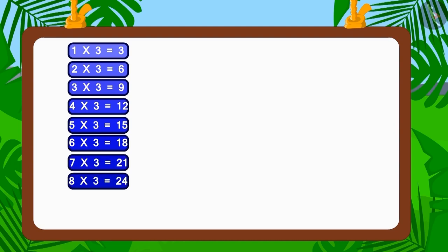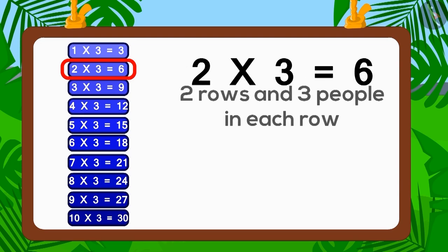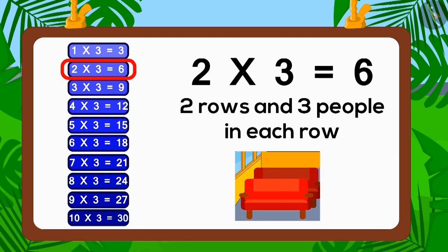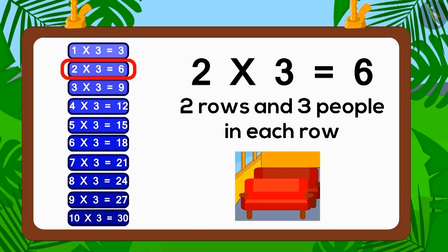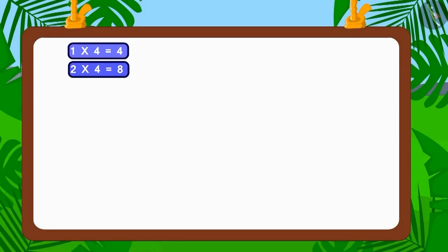Does the number 6 appear in the table of 3? Yes, 2 times 3 is 6. Therefore, 3 is the factor of 6. So if 3 people sit in each of 2 rows, how many people in total would be sitting on the bus? 6. Now let's check the table of 4.